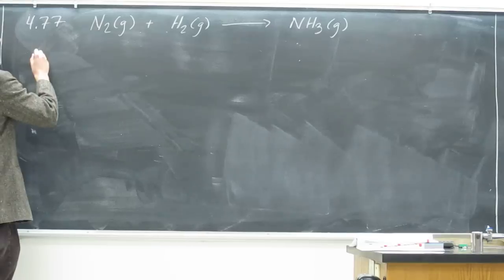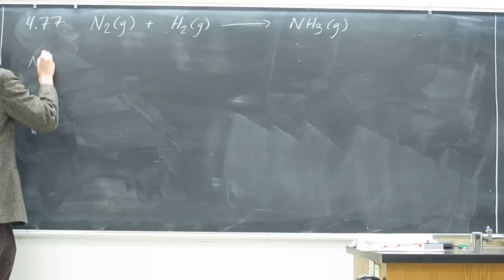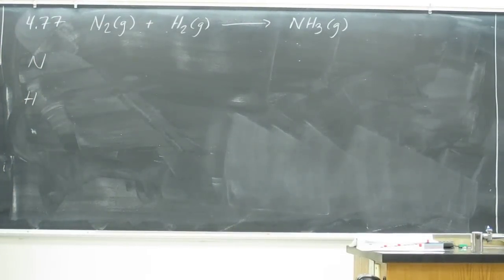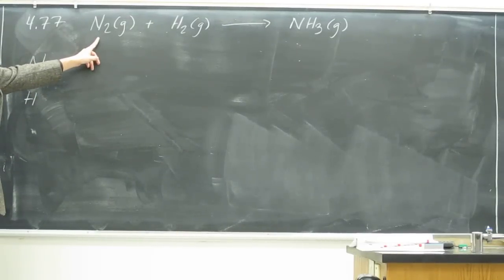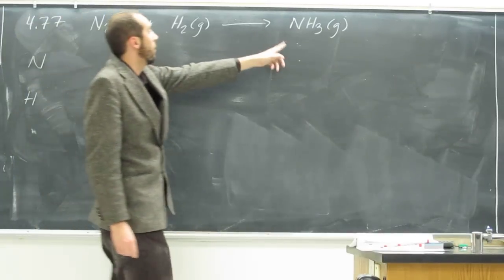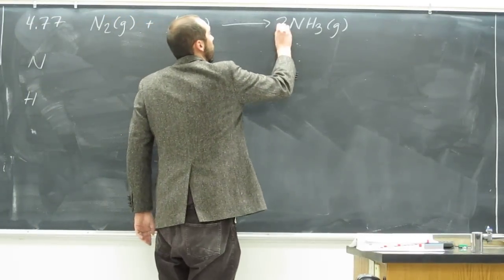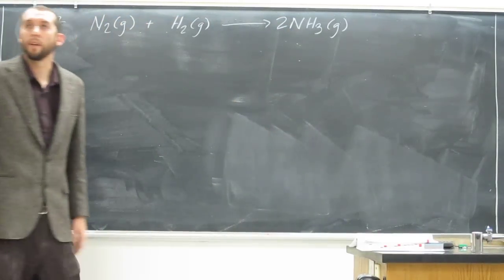So we want to balance, well, in this order, N then H. So here on this side we've got two N's, and on this side we've got 1, so we've got to multiply that by 2.